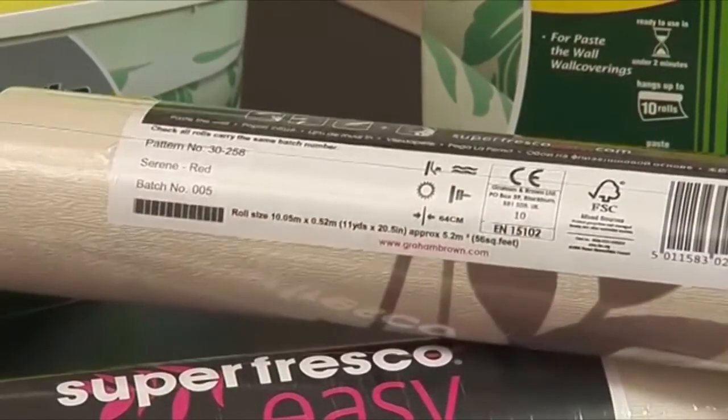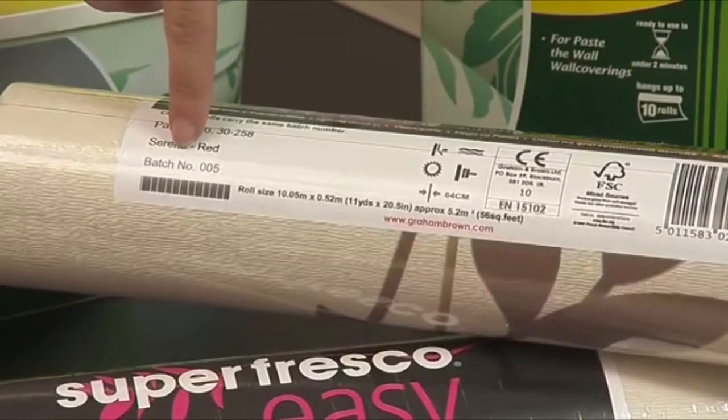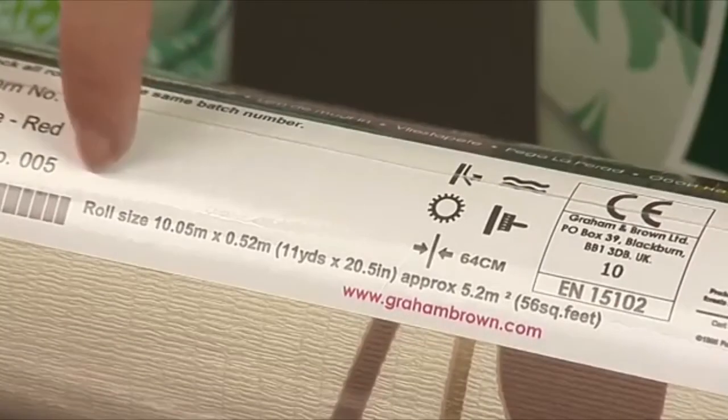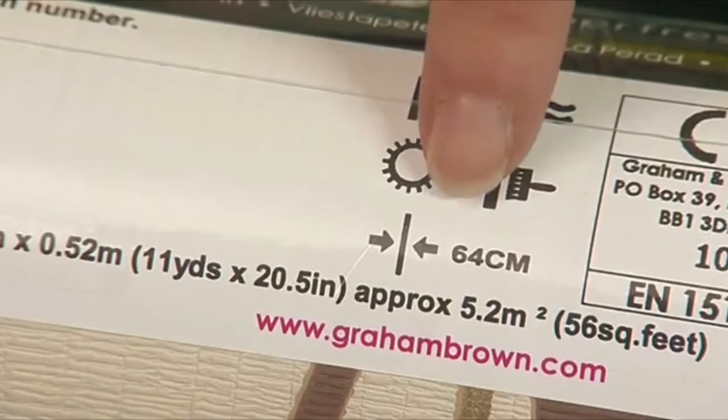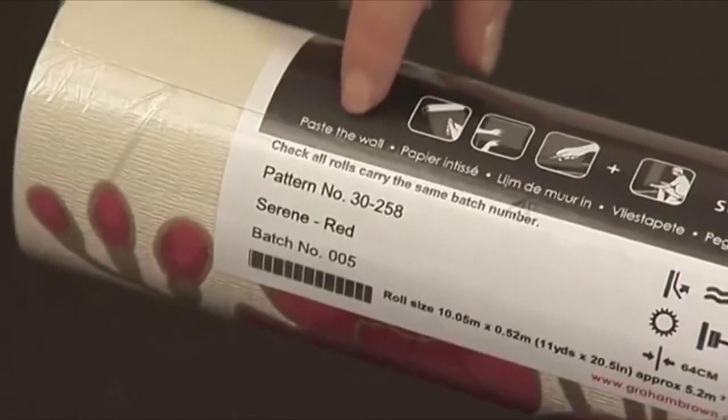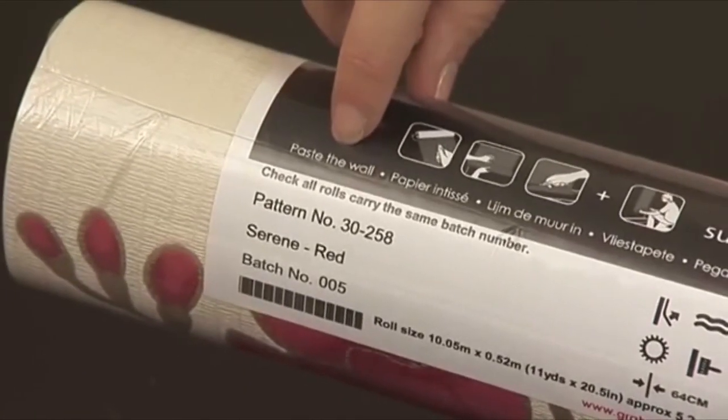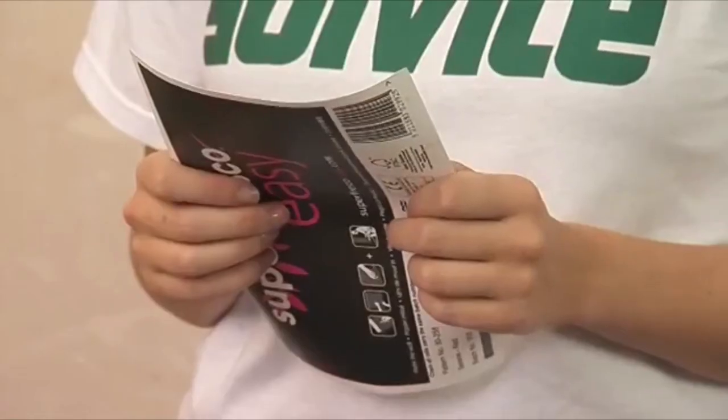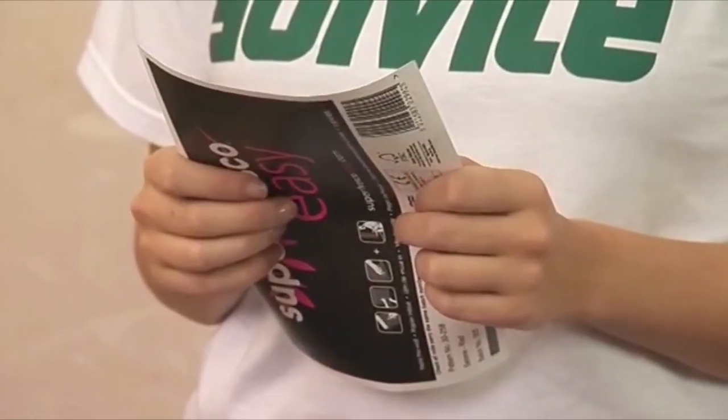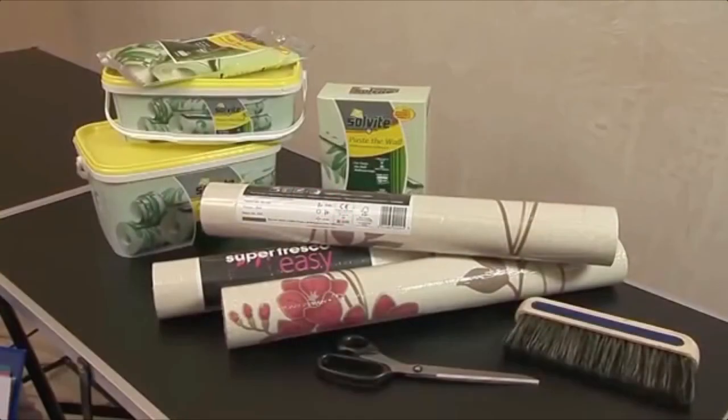Not only do you need to make sure that you buy the same batch number to avoid difference in shades, but it can tell you the roll dimensions, how often the pattern is repeated, soak time, and whether you need to apply wallpaper paste to the paper or to the wall. It's a good idea to keep a roll label to refer to until you're happy you've finished.